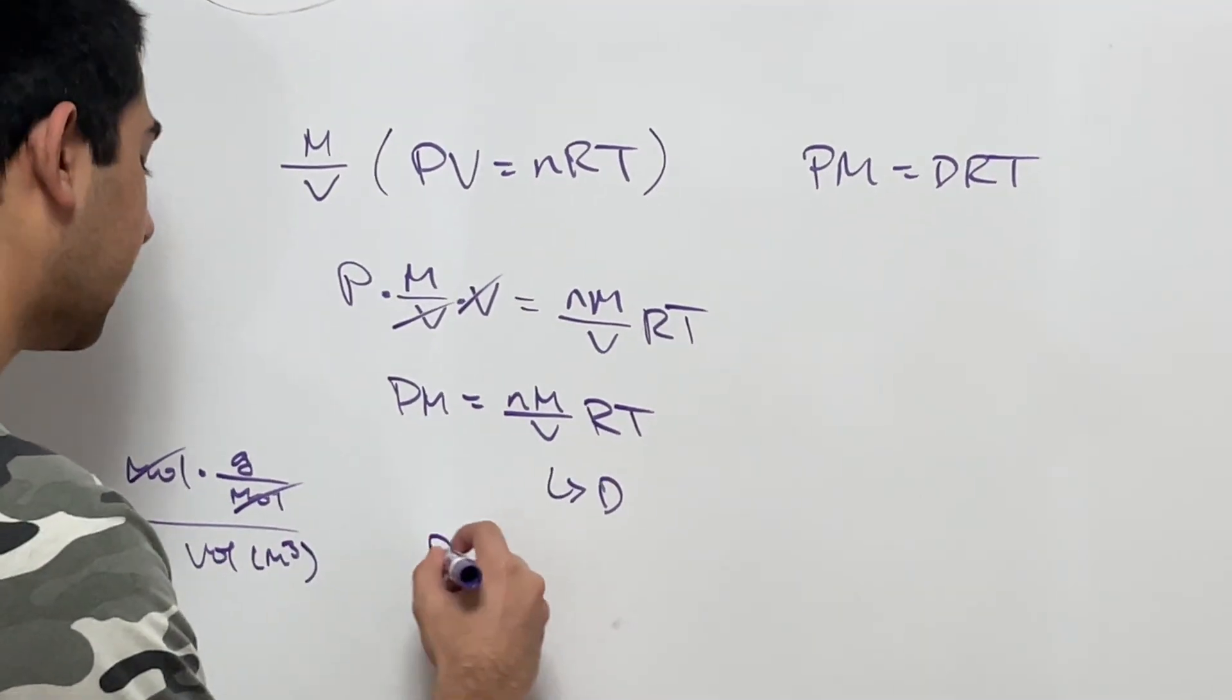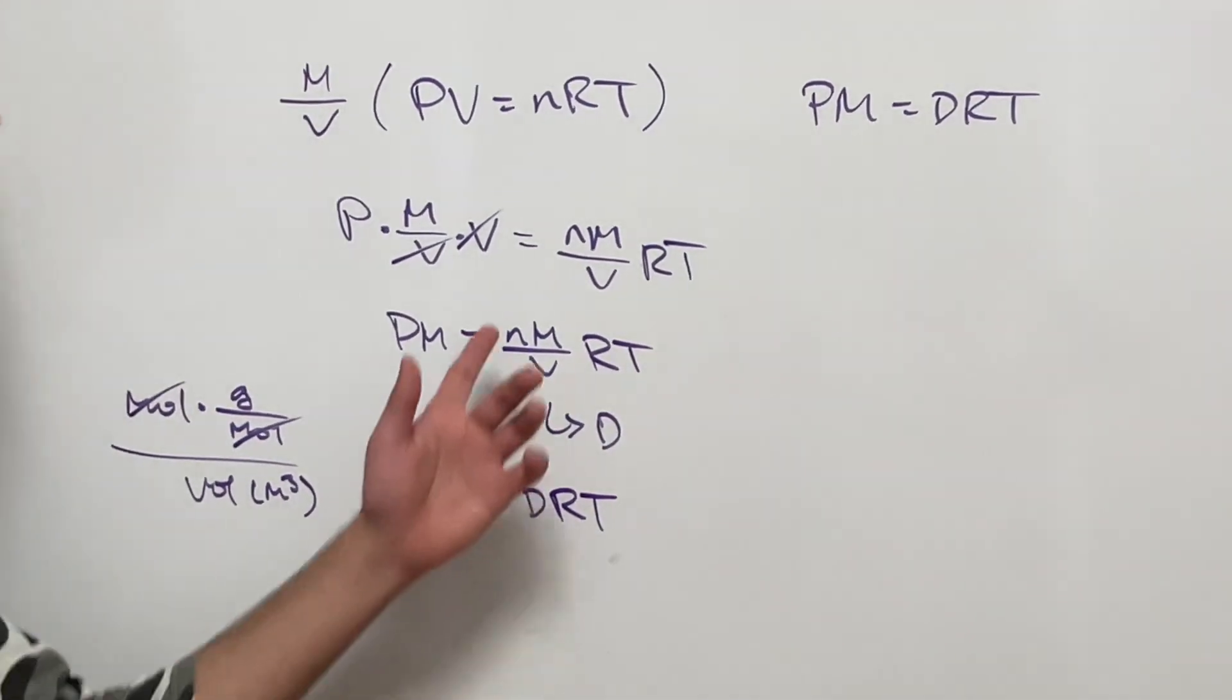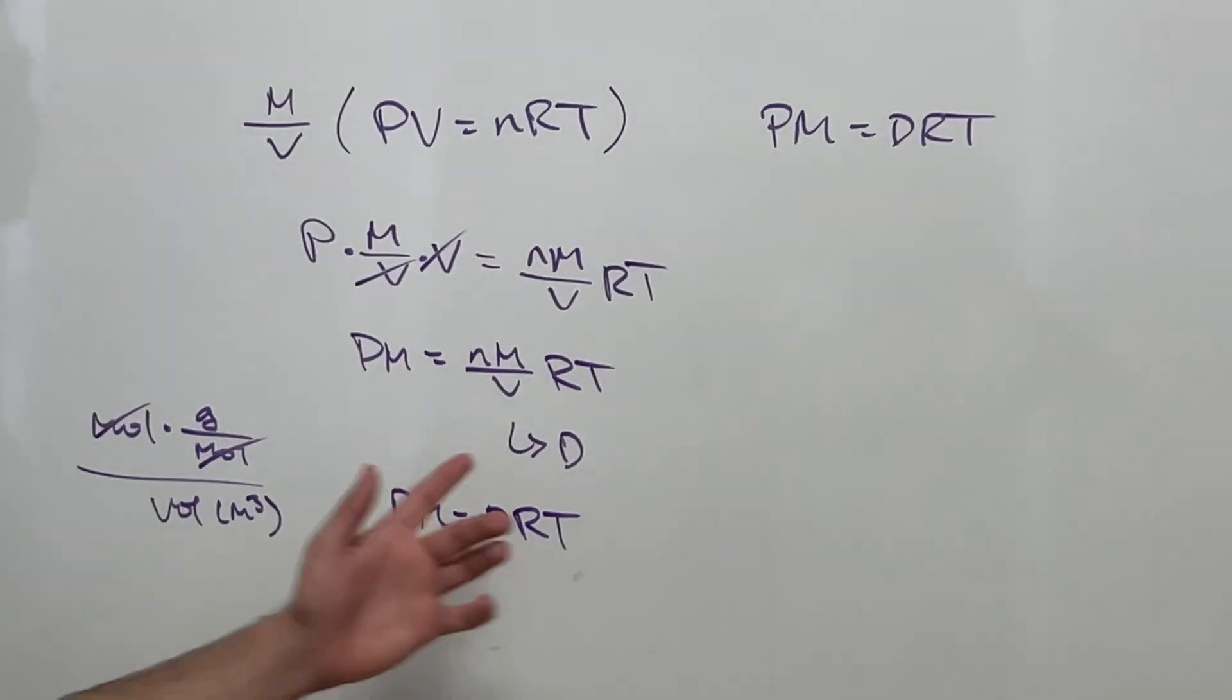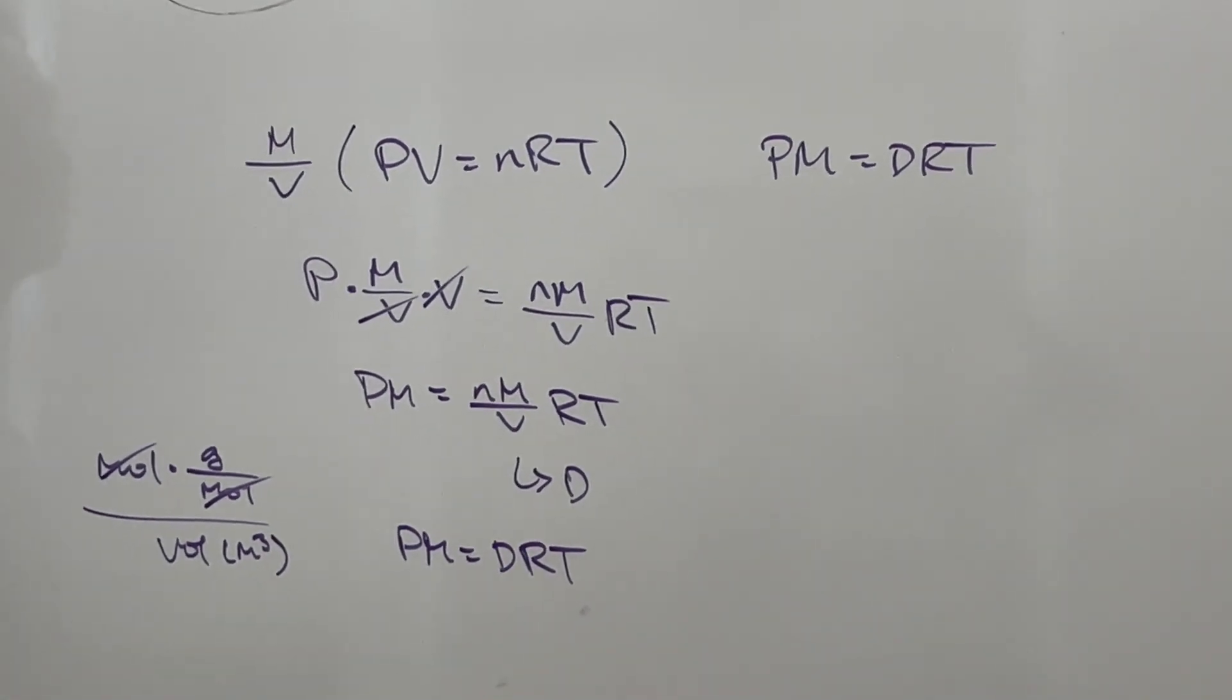That's basically it. That's how we get the formula PM is equal to DRT, because it turns out that nM over V comes out to represent density. Really simple derivation.